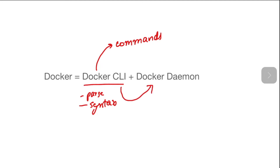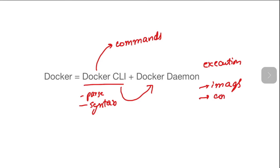The Docker Daemon has the responsibility of execution of the instructions. The Docker Daemon will take all the instructions and will interact with all the Docker objects, such as images, containers, volumes — anything that is required for the completion of the particular instructions.